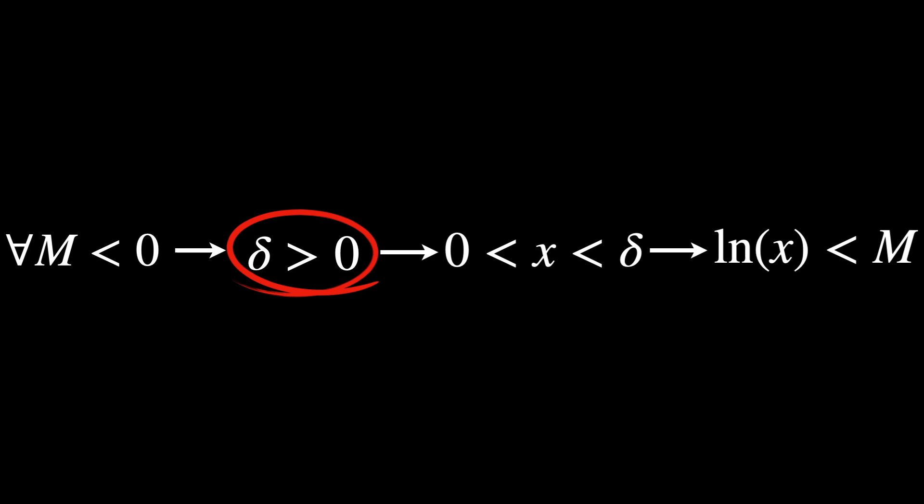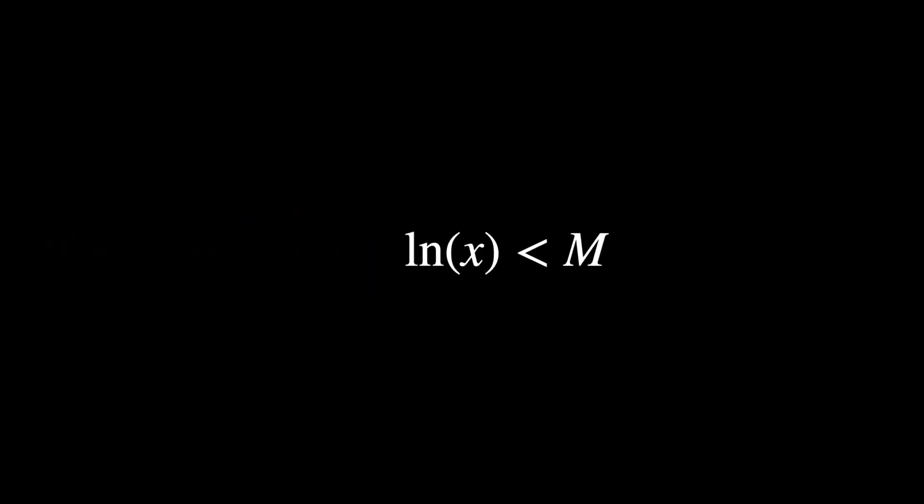Of course, looking at the graph, it's kind of an obvious fact, but we need to show it analytically, so rigorously. For every m negative, our goal is to find a delta positive, such that whenever x is between 0 and delta, we also have as a consequence that ln of x is less than m. So, at the end of the day, ln of x less than m is what we want to prove, and so we should focus our attention on it.